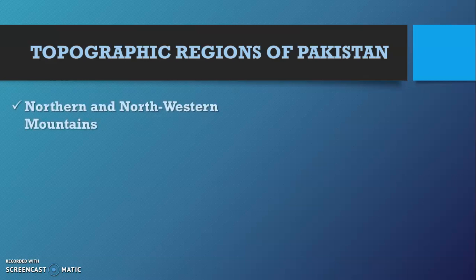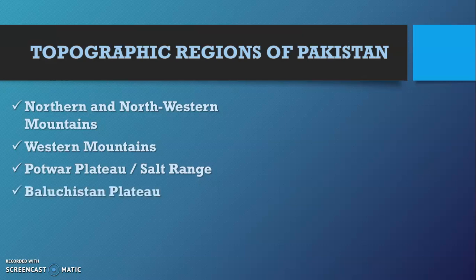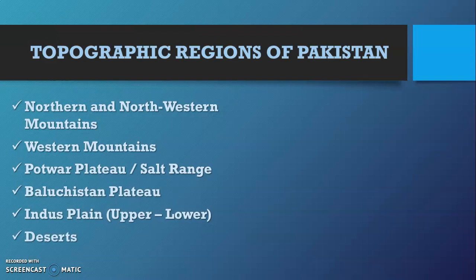Number one: northern and northwestern mountains. Then we have western mountains, Potwar Plateau and Salt Range, Balochistan Plateau, Indus Plain that is upper and lower Indus — which is also considered as Punjab and Sindh — and the desert regions. In this video I'm going to discuss only two major aspects related with all these regions: number one, relief, and secondly, drainage. There are other things such as the economic potential and the lifestyle of people living here, which we will discuss in the next video.